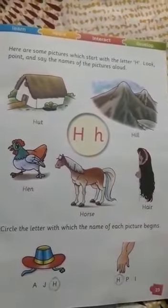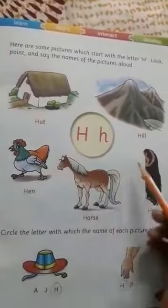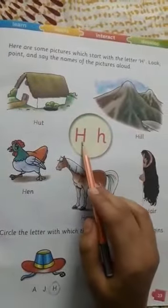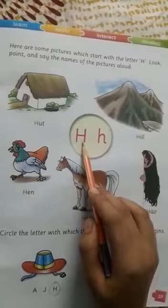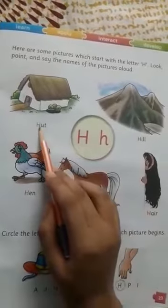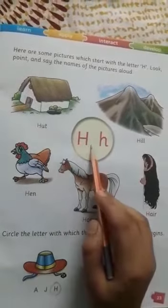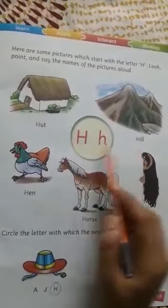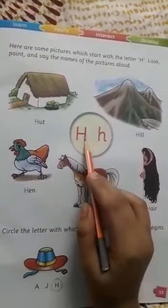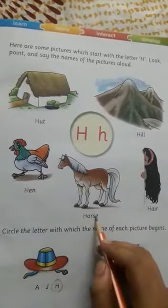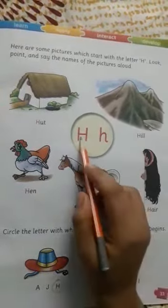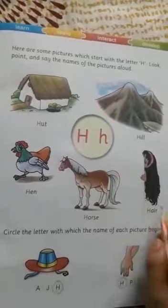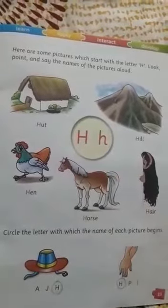So these are the words which are made with the letter H: H for heart, H for hill, H for hen, H for horse, H for hair.